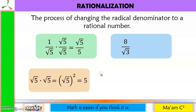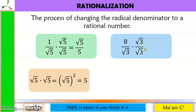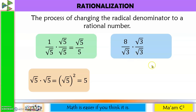Let's have another example. We multiply by the square root of 3 over the square root of 3. 8 times the square root of 3 is 8 square root of 3, and then the square root of 3 times the square root of 3 will be 3. No more radical in the denominator.